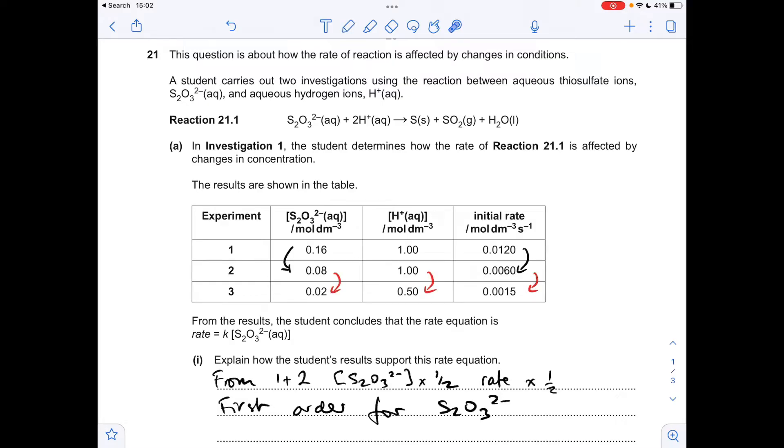Then to explain the H-plus being zero order, I've chosen experiments two and three. So you can see that the thiosulfate has quartered, the H-plus concentration has halved, the rate's quartered. Now we've already established that it's first order for thiosulfate, so you can see that that quartering of the concentration of thiosulfate is the only thing that's brought the rate down by that factor of four. So the H-plus must be zero order.